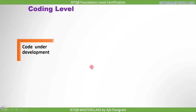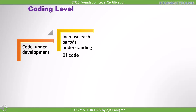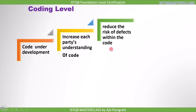Now let's discuss the third level of testing during the development process, and that is the coding level. How does testing at the coding level contribute to success? In the coding level you have code under development, and you will perform static testing on it. The intention is to increase the understanding of the piece of code. By doing this we reduce the risk of defects within the code, so if there are any defects we can find them by reviewing the code through static testing.